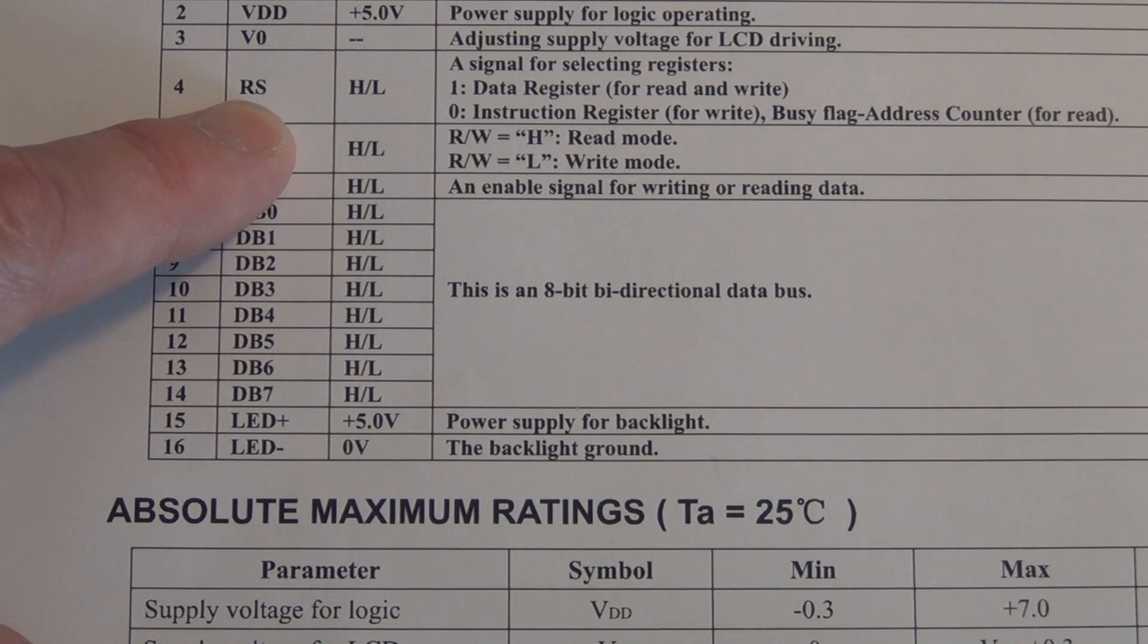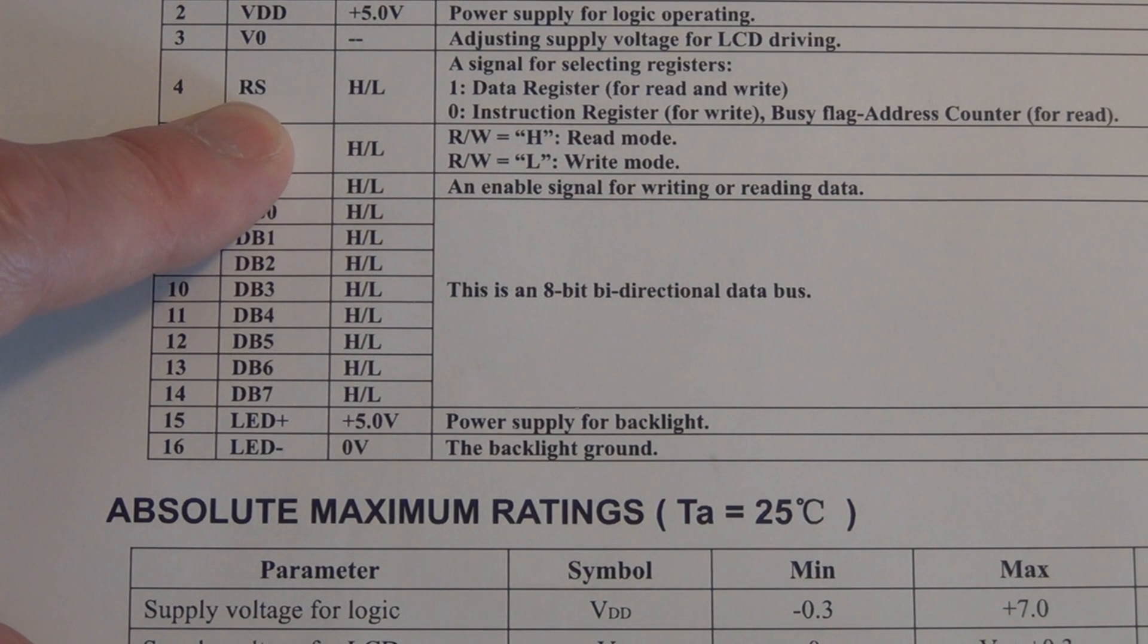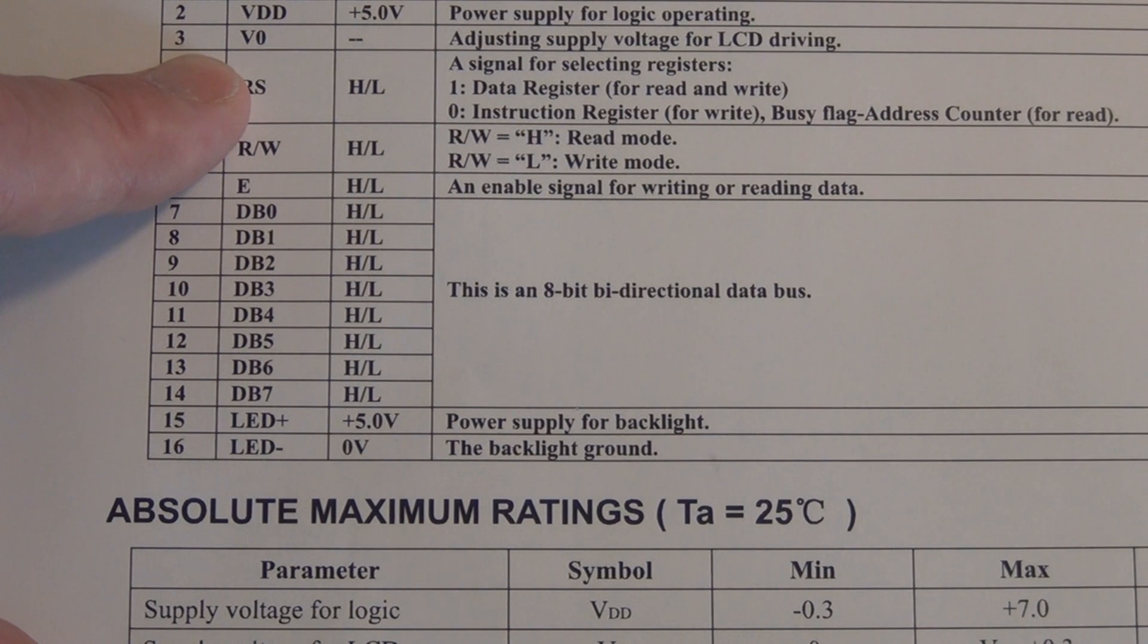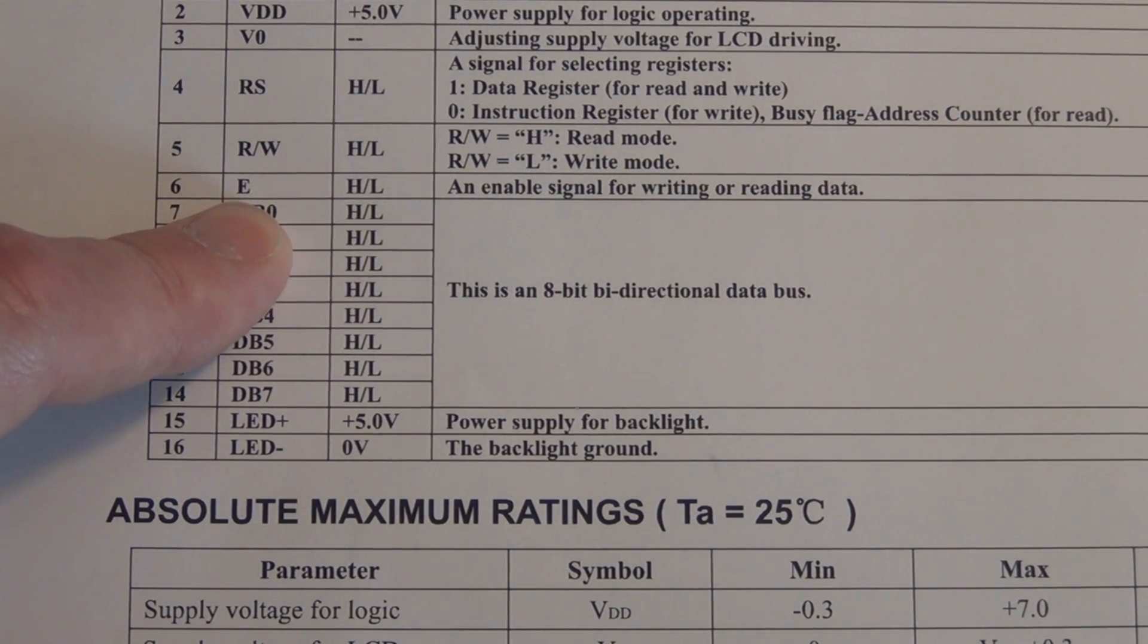RS is register select, and this tells the LCD display where to place the character or display the character. We've got pin 2 is the power supply voltage, pin 1 ground VSS, and V0 pin 3 that's for adjusting the voltage for the LCD for the backlight. And we have the enable pin, which tells the LCD whether it's ready to read or write.